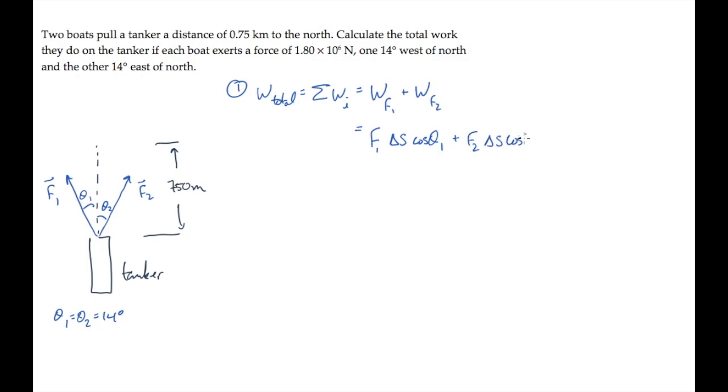Each of the forces has the same magnitude, and delta S is 750 meters, so this equals twice the magnitude of one force times the magnitude of the displacement times cosine of the angle, 14 degrees. And that gives us 2.62 times 10 to the 9th joules.